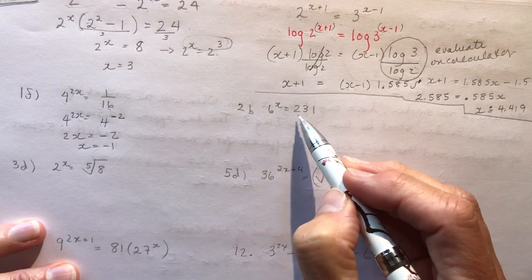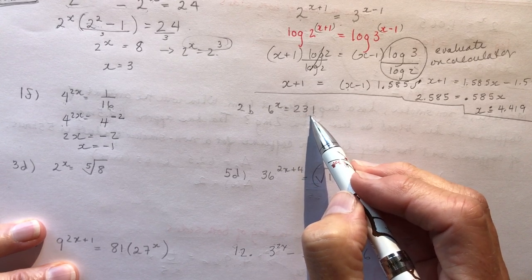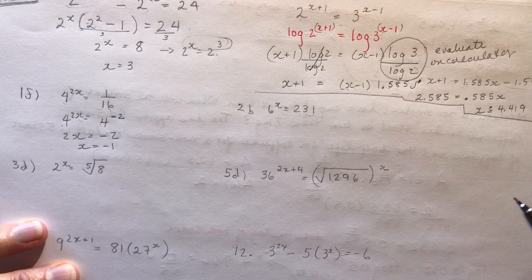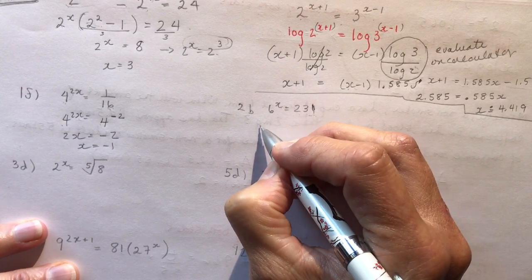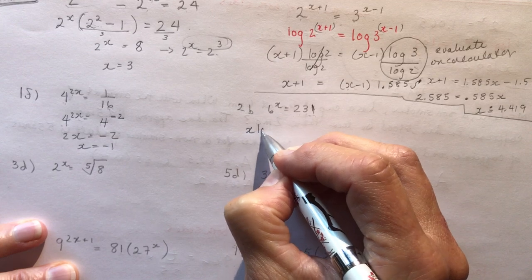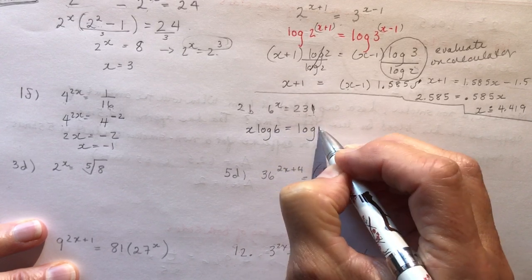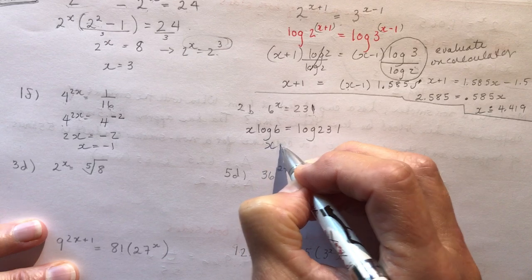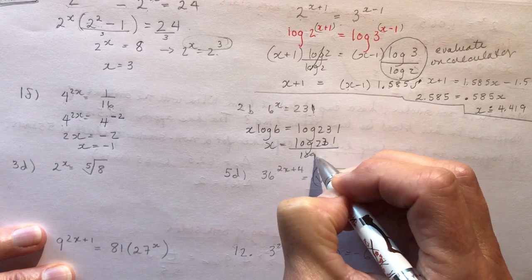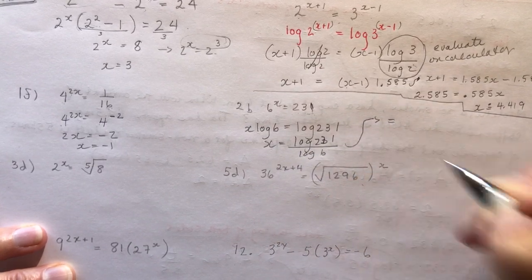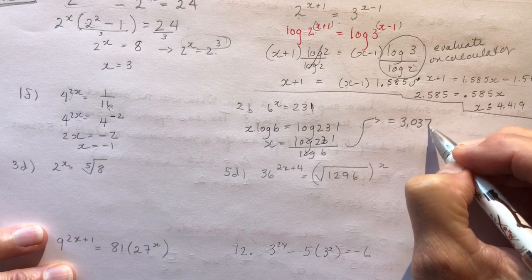Next: 6 to the x equals 231. I can't write 231 with a base of 6, so if you can't write it with the same base, take the log. Taking the log and applying the power law in one step: x log 6 equals log 231. So x equals log 231 divided by log 6, which comes out to approximately 3.037.